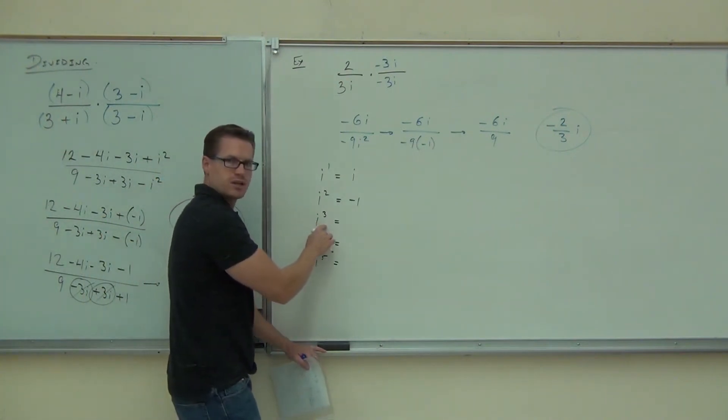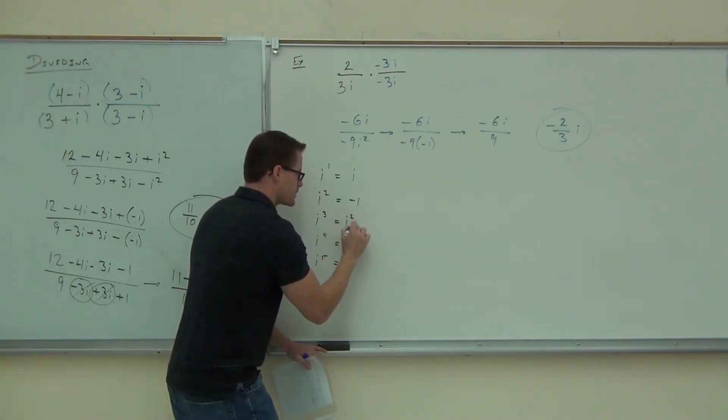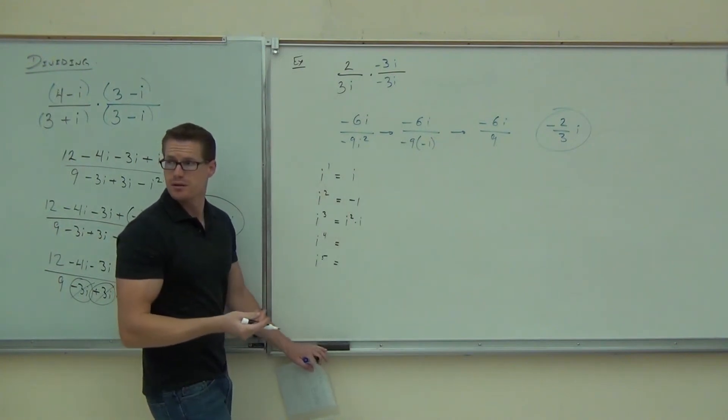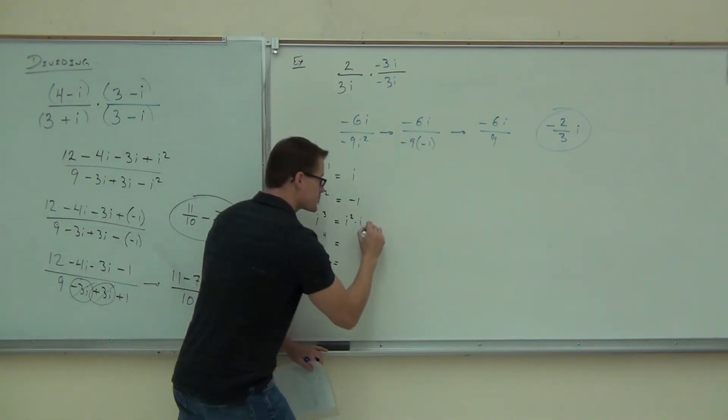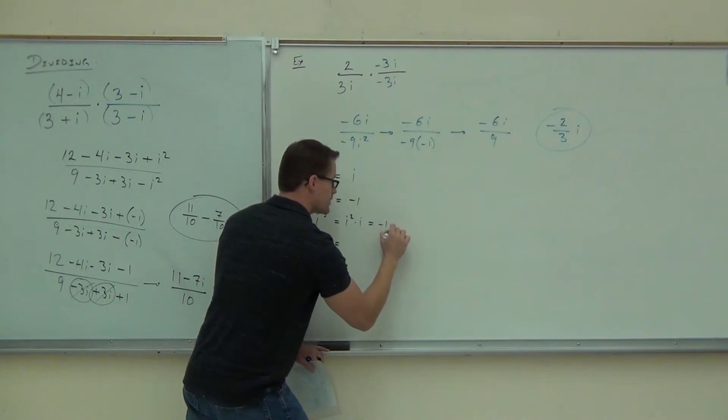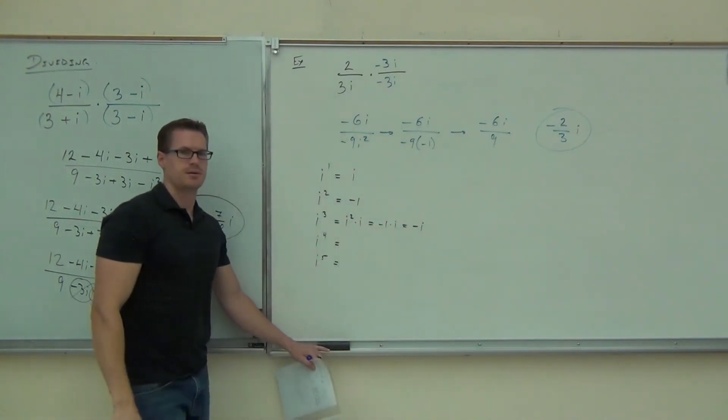i to the third power, do you believe me? I can write that as i squared times i. How much is i squared? This is really negative one times i. Negative one times i is negative i. You follow?